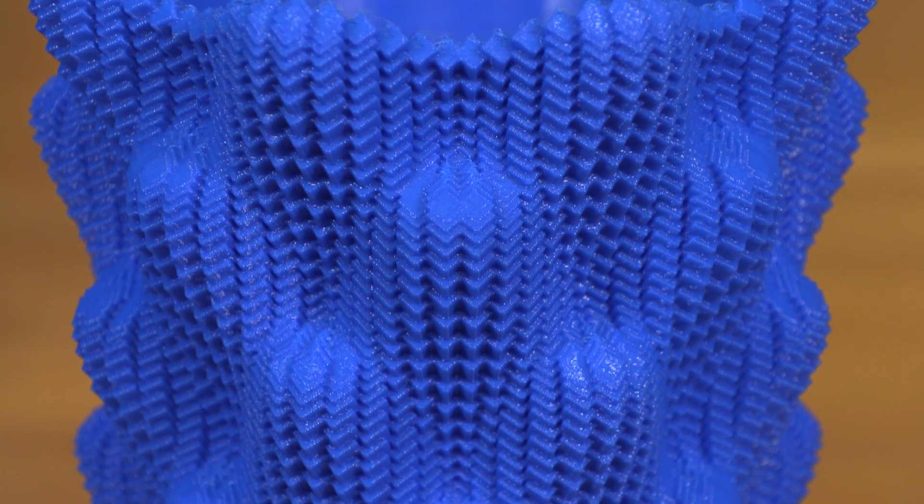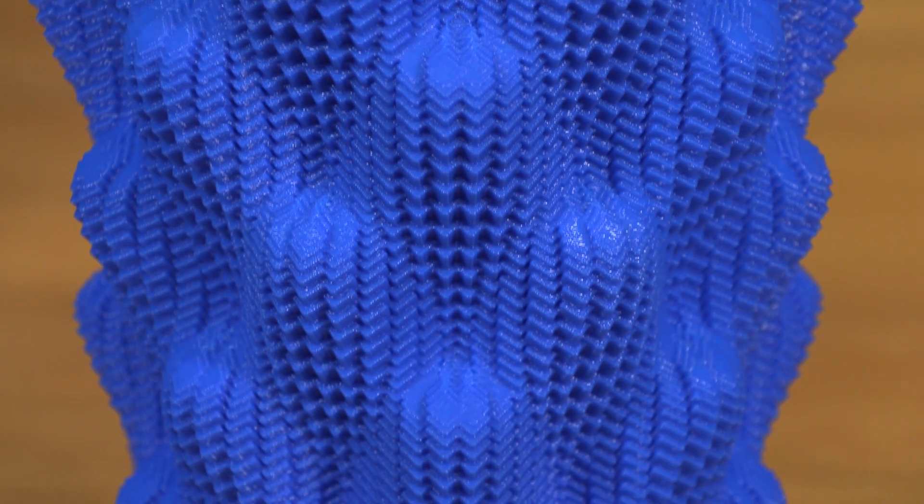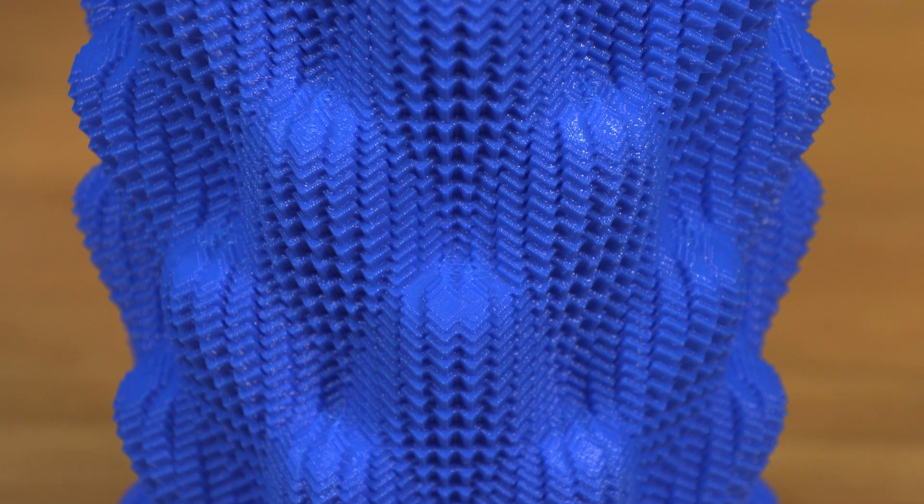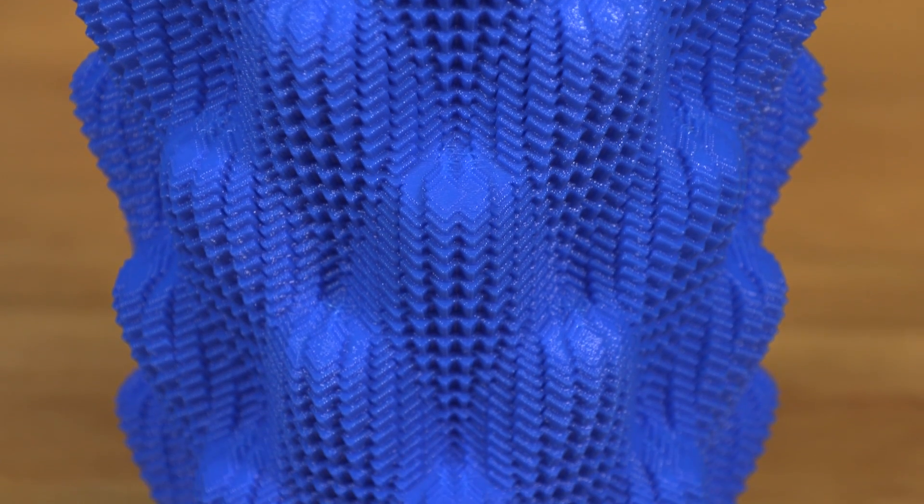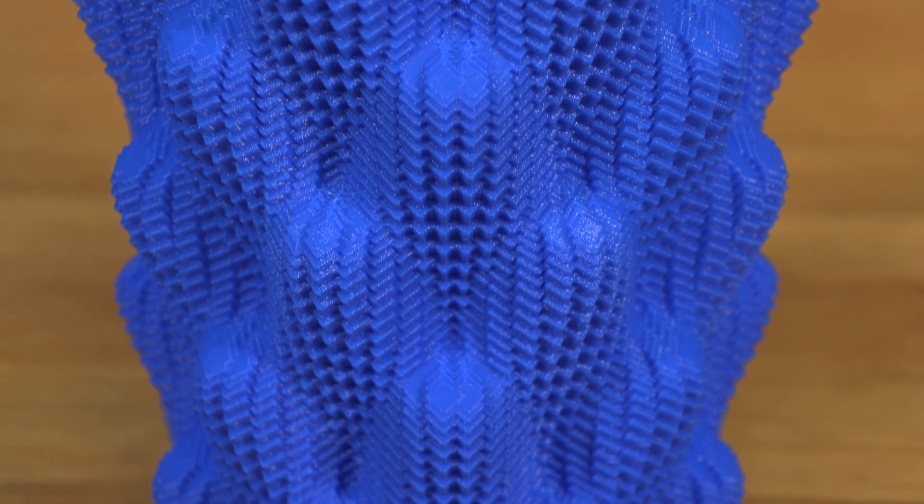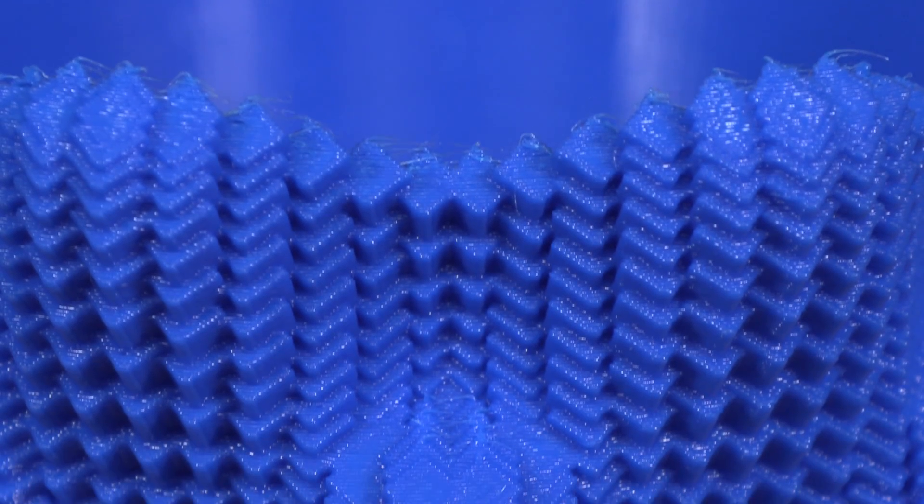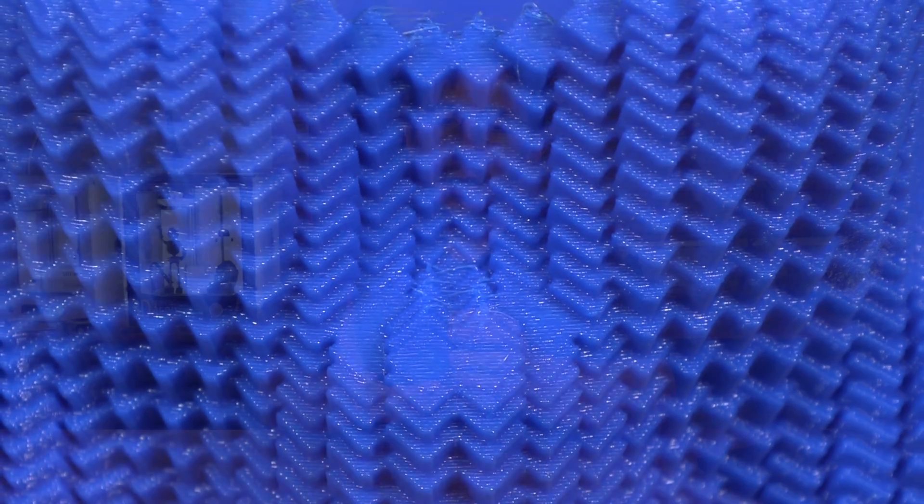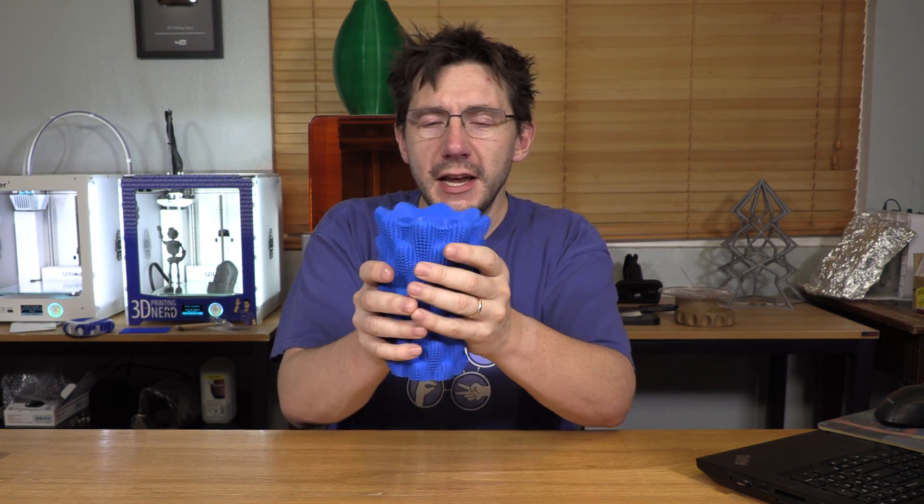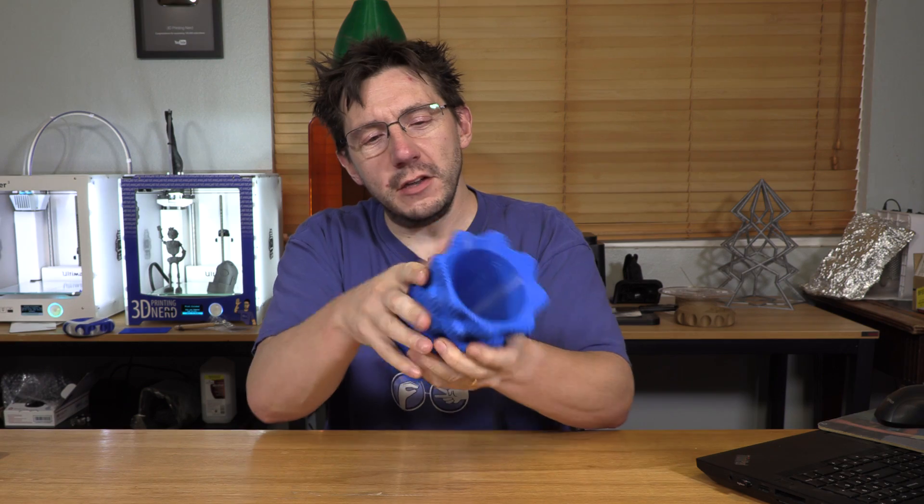This was sliced in Simplify 3D and printed on my GMAX 1.5 XT+. It took quite a while, but it's beautiful. Look at this thing, just the cuboids, the little squares that stick out all over the place. It has this crazy tactile feel and it's gorgeous. I love this thing, but I'm on my GMAX. I got to go bigger. So I did.